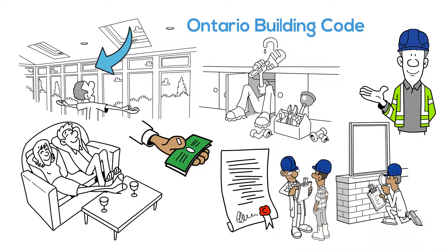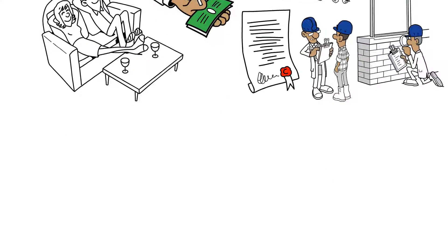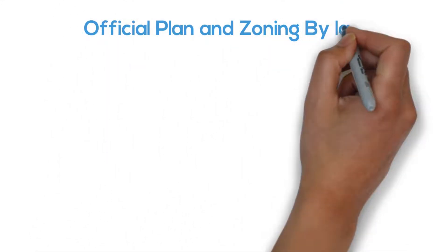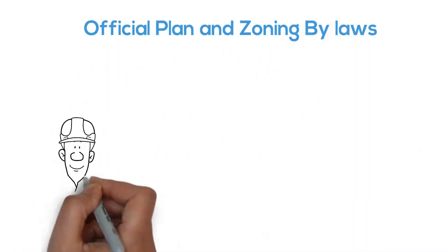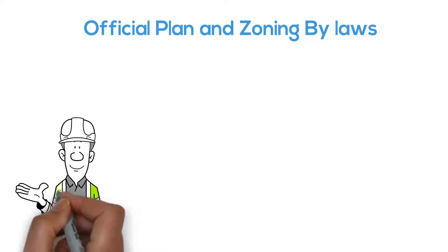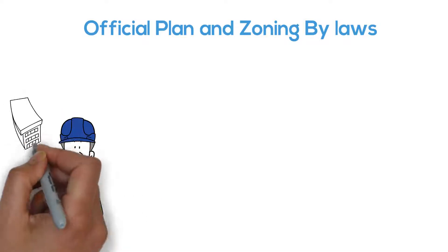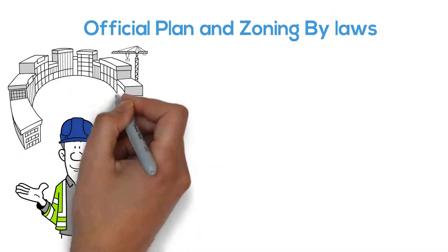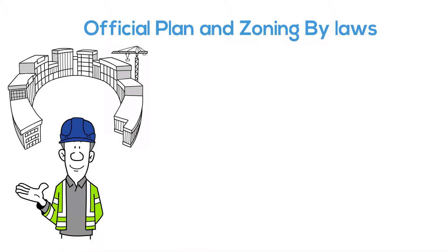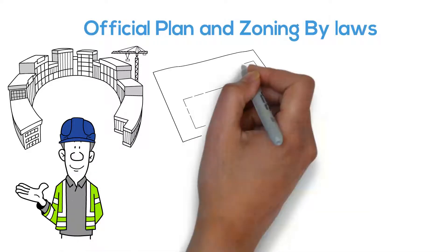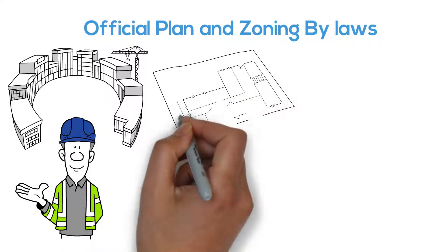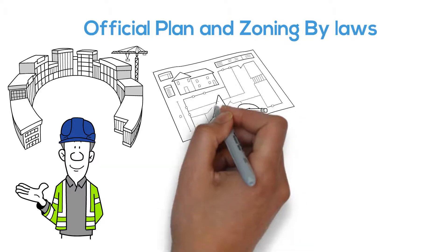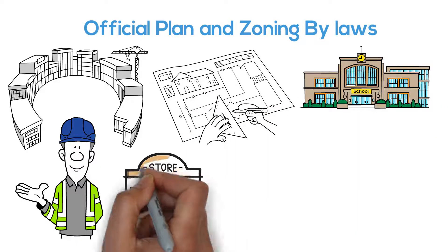In addition to the Ontario Building Code, there are the Official Plan and Zoning By-laws. These come from the municipality and can be amended, even for a specific site. The Official Plan sets objectives — for example, it can specify a mix of home types with access to schools and shops.